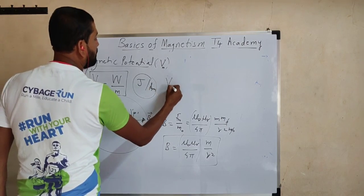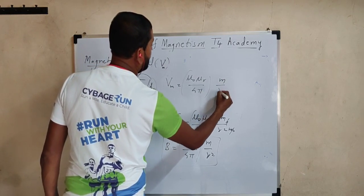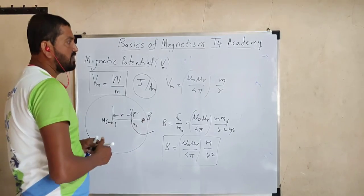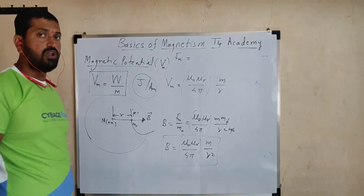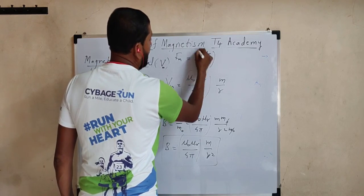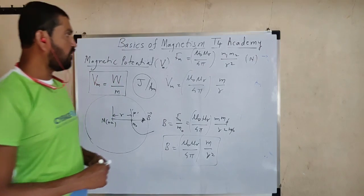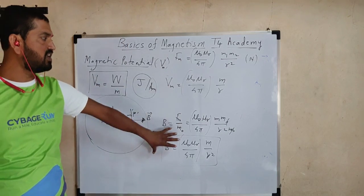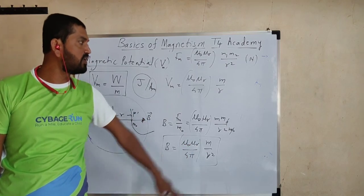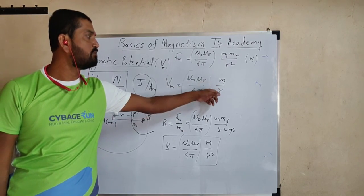For magnetic potential, the formula is almost the same, with only the difference that V equals μ₀μᵣ divided by 4π times small M divided by R. So induction has R squared in the denominator, potential has R. Induction is a vector; potential is a scalar. Magnetic force between two pole strengths is given by Coulomb's law in magnetism: replace the constant 1/(4πε₀) with μ₀μᵣ/(4π), replace electric charges with pole strengths M1 and M2, also called magnetic charges, over the square of the distance between them.